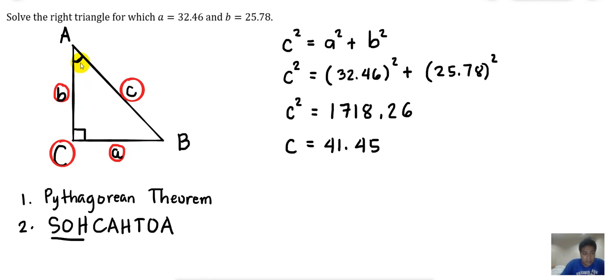If this is the angle, then side A is the opposite side, and side B is the adjacent side — it is right beside the angle. The involved sides are opposite and adjacent. From SOHCAHTOA: sine is opposite over hypotenuse, cosine is adjacent over hypotenuse, and tangent is opposite over adjacent. So we will use tangent, since opposite and adjacent are involved.